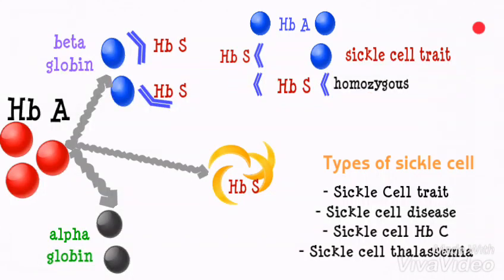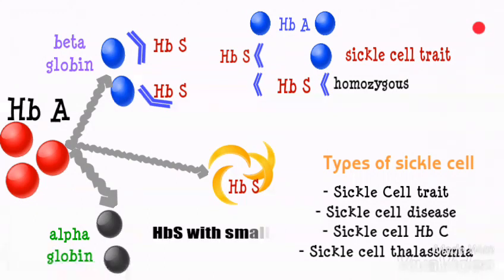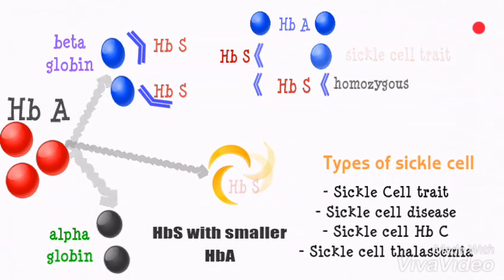Sickle cell hemoglobin C is a form of sickle cell when the red blood cells contain both HbS and HbC but no HbA. Lastly, sickle cell thalassemia is when the red blood cells contain predominantly HbS with smaller fractions of HbA.